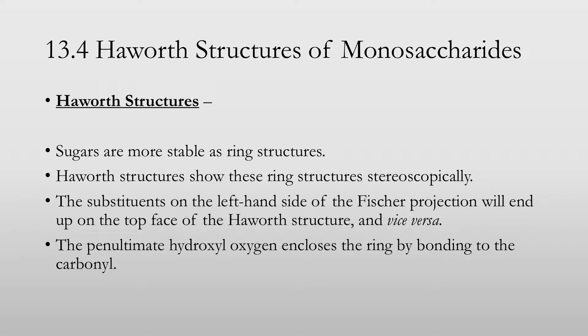Fischer projections are good and all, but they're not really ideal. Sugars don't generally exist in this straight chain form. They're actually normally in ring structures. And the way that chemists draw these ring structures follows the Haworth structure type of drawing. Haworth structures show the ring structures stereoscopically, so that means three-dimensionally.